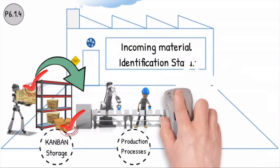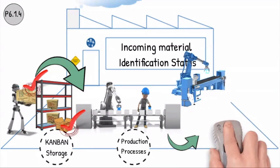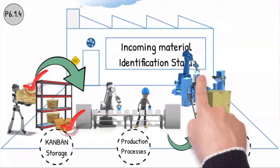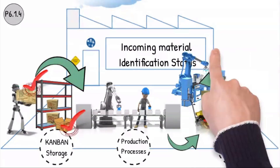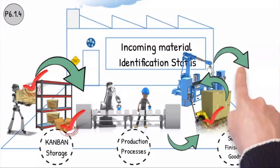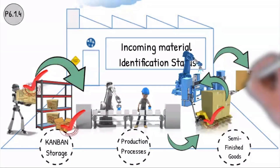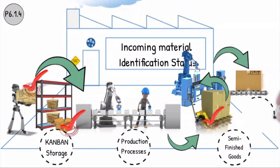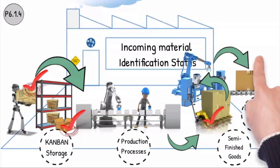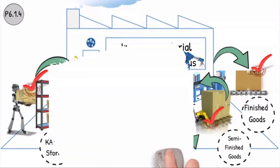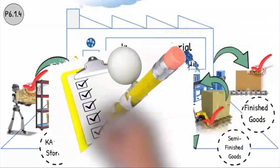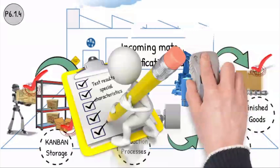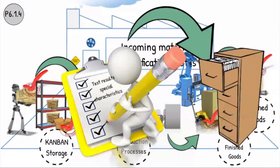It must be ensured that only released materials and parts are forwarded to the next production process steps and used. The traceability of the units produced must be ensured according to the customer identification and traceability requirements within a reasonable framework. The special characteristic test results must be documented and archived accordingly.